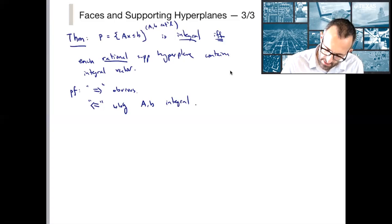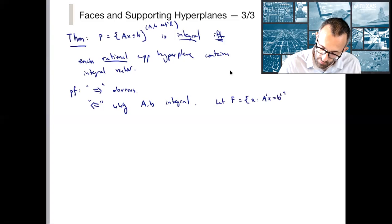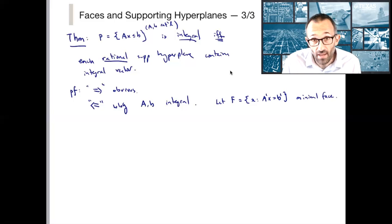So now let f denote a minimal face. So if it's a minimal face, just by our previous slide, it has to be of the form a prime x equals b prime. Again, you can just think of a vertex here. Just think of this being a vertex if you like. But we're trying to prove something in more generality. So let f be a minimal face. And again, usually for a face, I need to write that x is in p such that a dash x equals b dash. Here, because of minimality, I'm allowed to omit the description that x has to belong in p. So again, if p is bounded, then f has to be an extreme point.